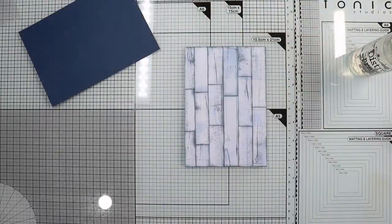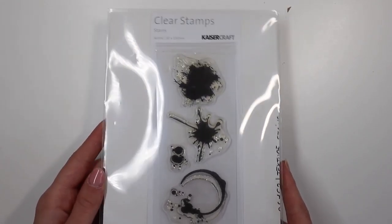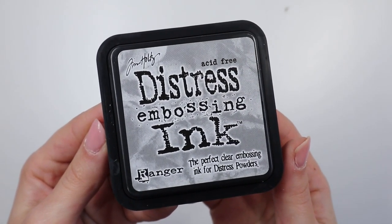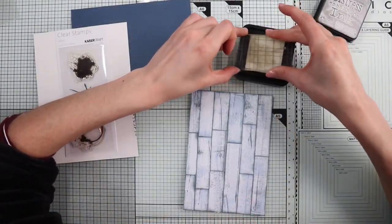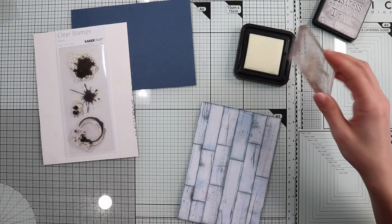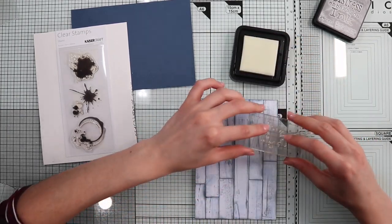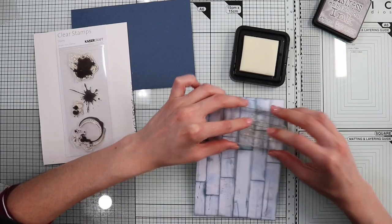Another mixed media technique is the random stamp, to add interest to the background. In this case, I'm gonna stamp some stains here and there with clear ink. They are coffee stains, but they can be paint stains, perfect for a graffiti style.